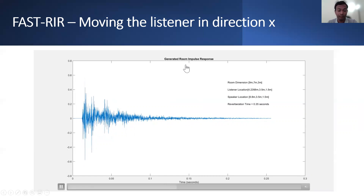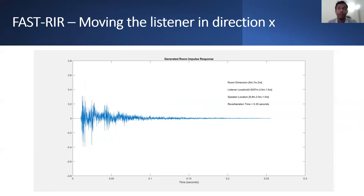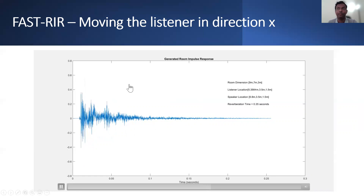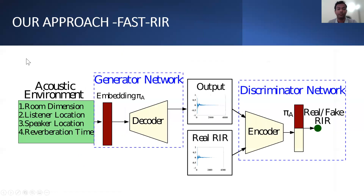The magnitude of the direct response is partially controlled by the reverberation time. Our fast RIR architecture consists of a generator and a discriminator network. Our generator network takes shoebox-shaped room dimensions, listener and source positions, and reverberation time as input and generates the corresponding room impulse response. Our discriminator network discriminates between the generated room impulse response and the ground truth room impulse response for a given acoustic environment during training.